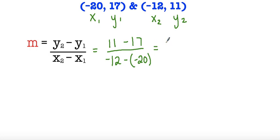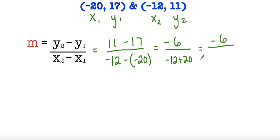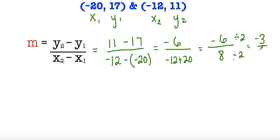So 11 minus 17 is negative 6. And then here I have negative 12 plus 20. The signs are different so we subtract and keep the sign of the number with the biggest absolute value. So 20 minus 12 is 8, and the number with the biggest absolute value is positive, so it's positive 8. We can simplify this fraction because both 6 and 8 are divisible by 2. So our slope in this case is negative 3 over 4.